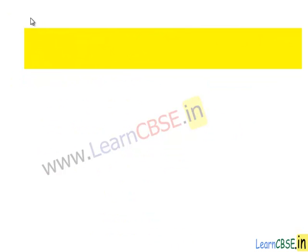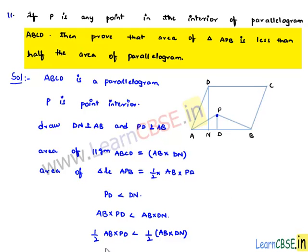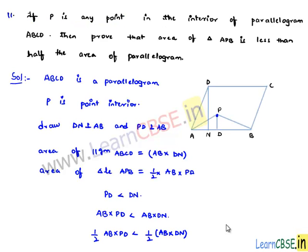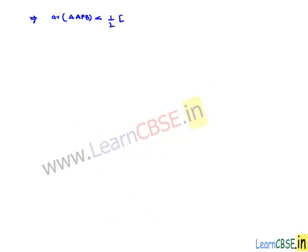Which implies we have that half times AB times PD is area of triangle APB. Therefore, let us replace that. Area of triangle APB is less than half times the product of AB and DN, but we know that the product of AB and DN is area of parallelogram ABCD.